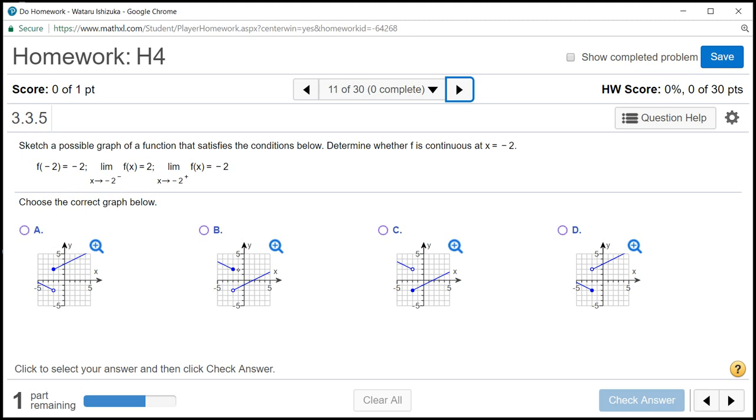And B has the same problem. At negative 2, you're going to have a positive value. So when x is negative 2, you have a dot there, so that's going to be negative 2. So this is promising, and D is the same way, that's promising. So it's going to be either C or D.